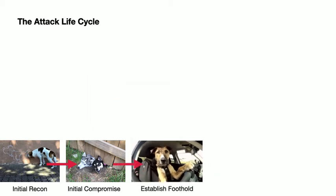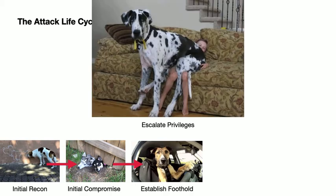But the initial compromise usually does not give the attacker access to the data they really are after, and often does not yield sufficient privileges to accomplish their objective, nor even to move within the infrastructure organization, so the attackers will typically attempt to gain elevated privileges. In practical terms, consider a vulnerability in, say, PHP, whereby an attacker gained access to the web server as nobody — the Unix user running the HTTP server.